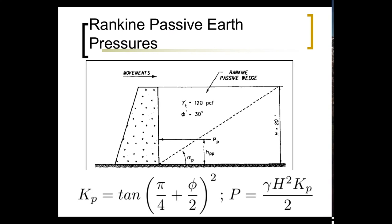For Rankine passive pressure, Kp = tan²(45° + phi/2). Kp and Ka are reciprocals of each other in Rankine theory with level backfill. The passive force has the same form as the active force, just with Kp instead of Ka. One caution: don't let the graphic in the problem throw you — make sure you read the problem carefully and determine whether they want active, passive, or at-rest pressures before you start computing.